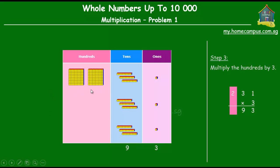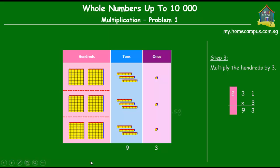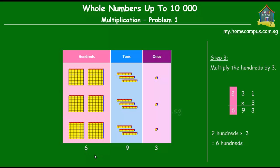Finally, the third step is to multiply the hundreds by three. There are two hundreds. When we multiply two hundreds by three, we get three sets of two hundreds, which equals six hundreds. So two times three is six, or two hundreds times three is six hundreds. Therefore, 231 times 3 equals six hundreds, nine tens, and three ones.